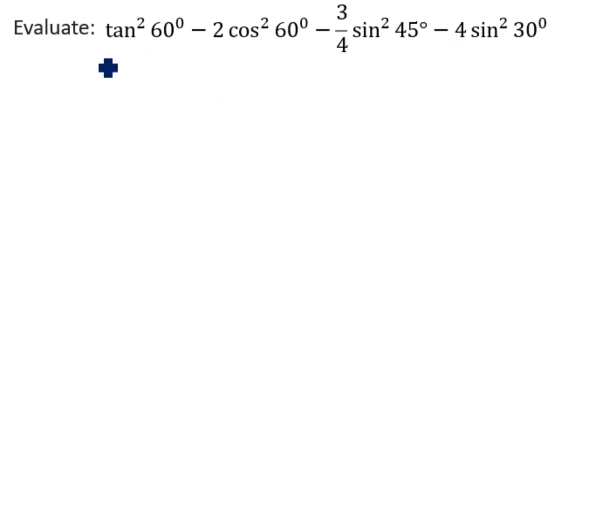What is tan 60°? Tan 60° equals √3. What is cos 60°? Cos 60° equals 1/2. What is sin 45°? Sin 45° equals 1/√2. What is sin 30°? Sin 30° equals 1/2.